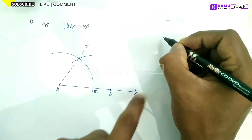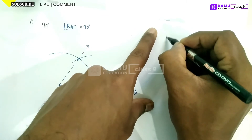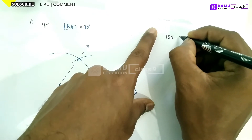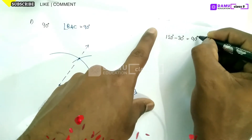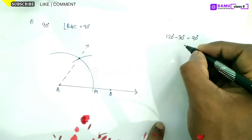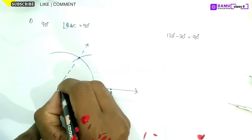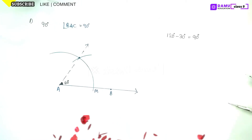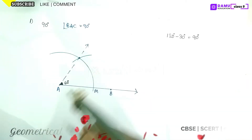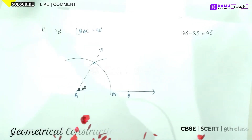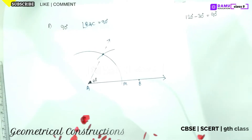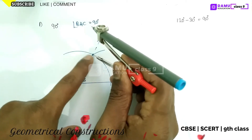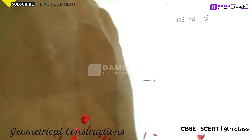Now for 90 degrees, we need to think: 120 minus 30 degrees equals 90 degrees. So we will construct 120 degrees next. We already have 60 degrees; now again construct another 60 degrees from that point to get 120 degrees.